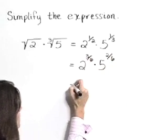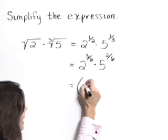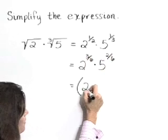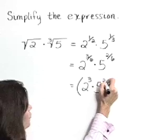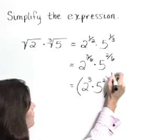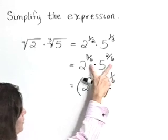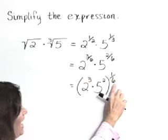Now, we can group our 2 and 5 together. I'm going to write this as 2 to the third times 5 squared, all raised to the one-sixth power. So we brought that one-sixth power out.